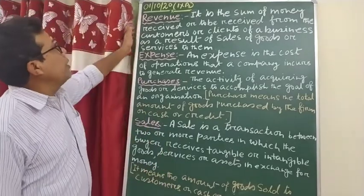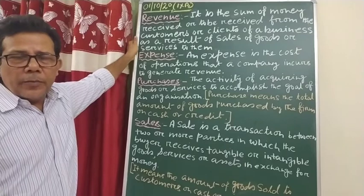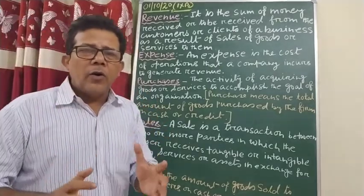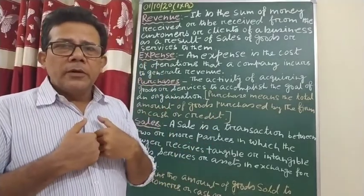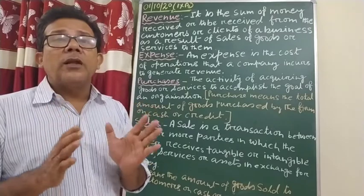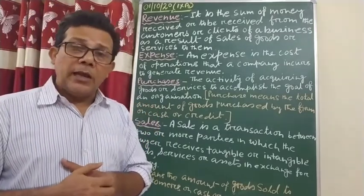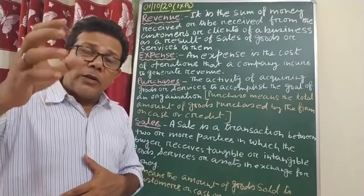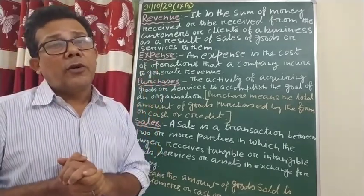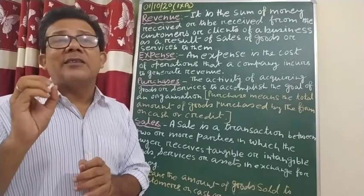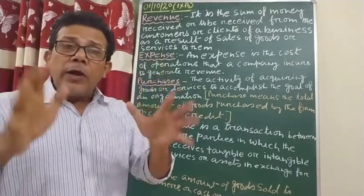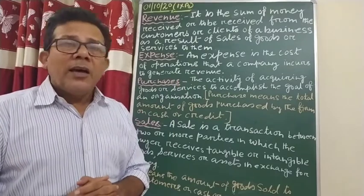First: revenue. Earlier I told you the meaning of revenue. Revenue basically means what comes in — whatever money our organization earns, or whatever money our organization receives, or the money the organization is supposed to get from someone else, that is what is called revenue. Revenue basically deals with the money — what you are going to receive, or what you have already received. Whatever is coming, that is called revenue.